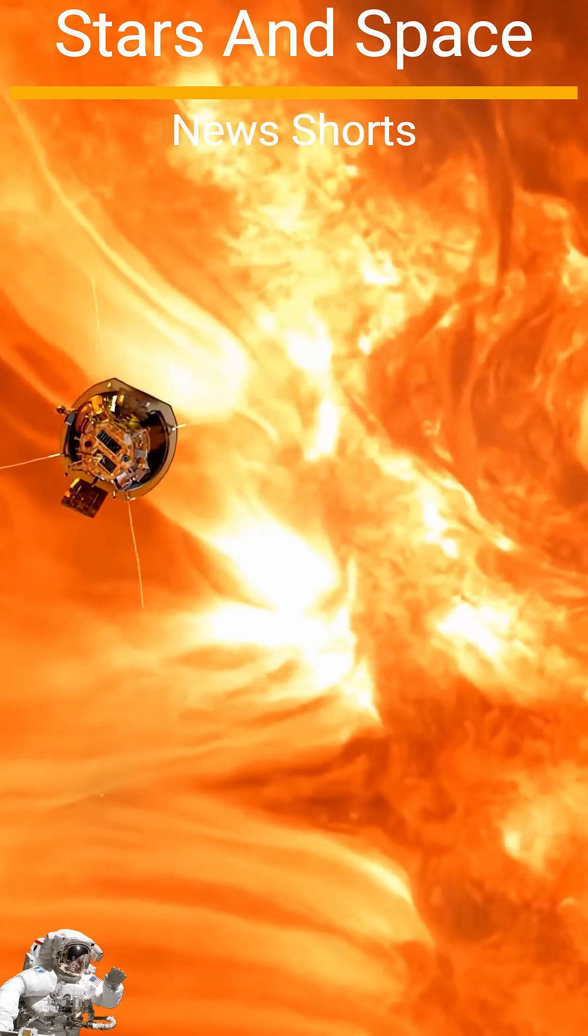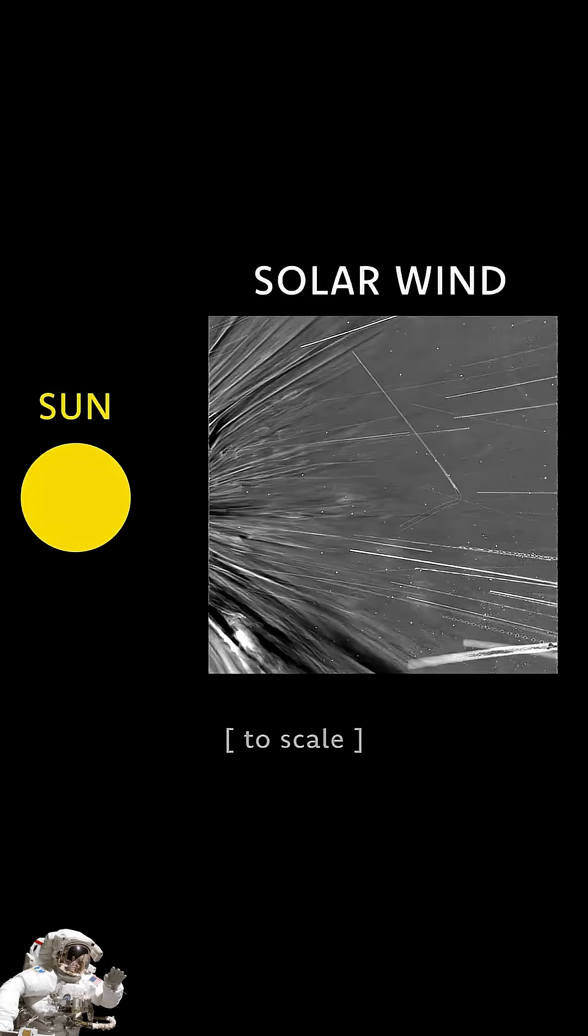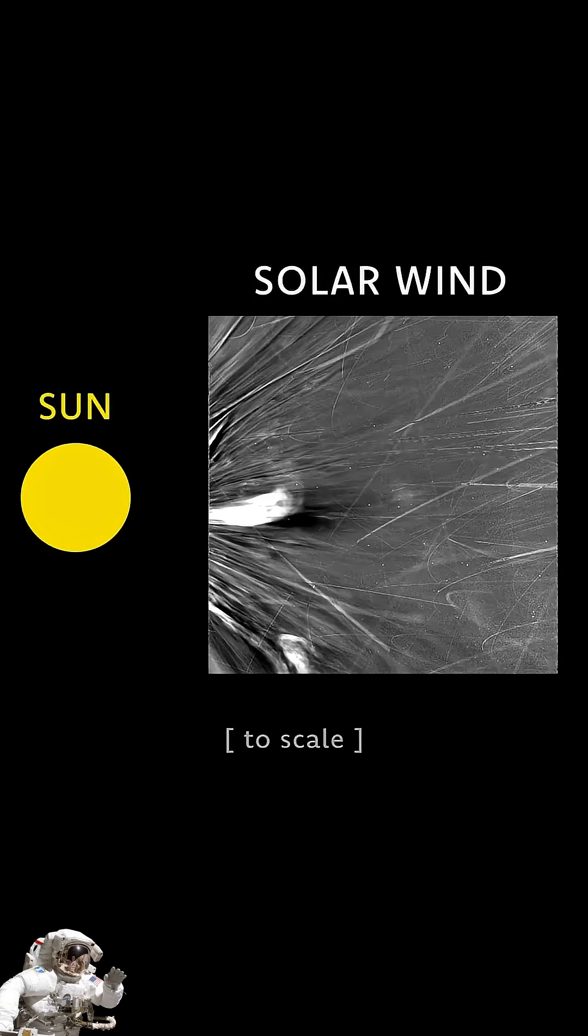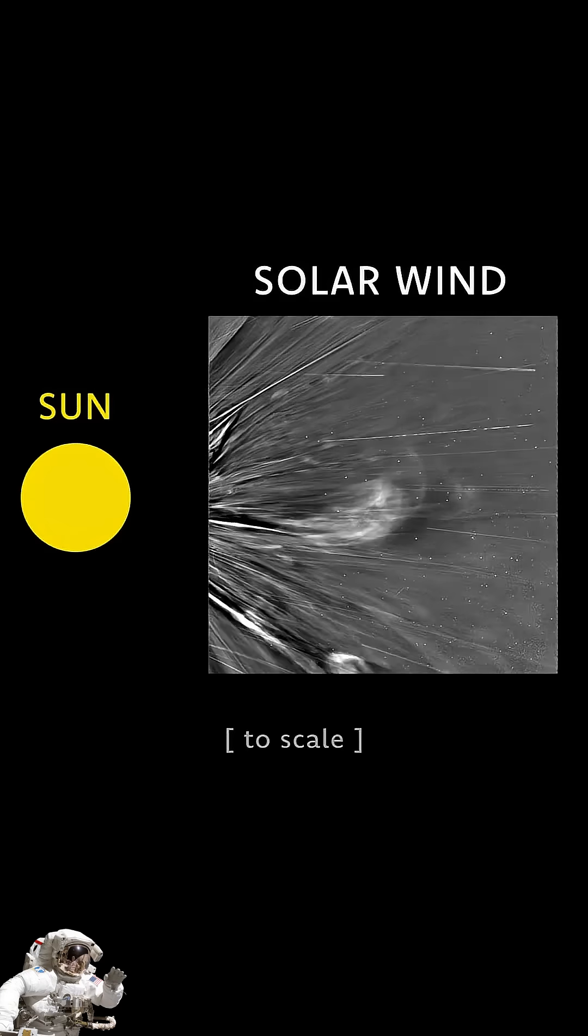As Parker Solar Probe approached the sun in December 2024, it took this video of the solar wind, particles and magnetic fields that flow out of the sun.